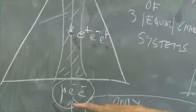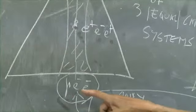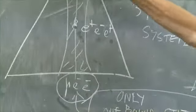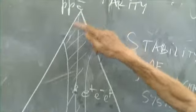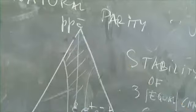There is the negative hydrogen ion, P, E minus, E minus, and there is the ionized hydrogen molecule, which is P, P, electron.